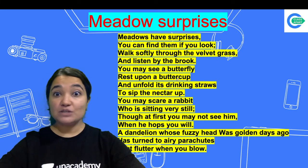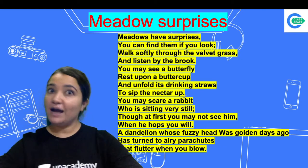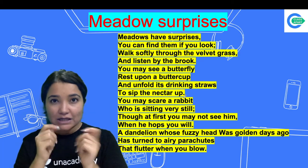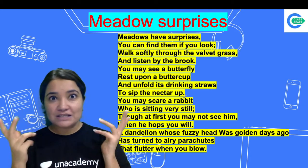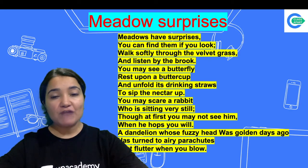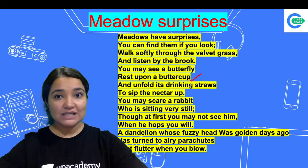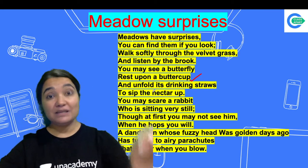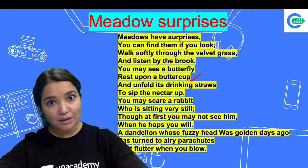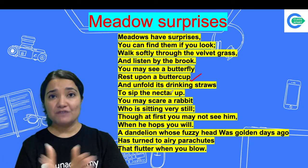You may see a butterfly rest upon a buttercup and unfold its drinking straws to sip the nectar up. Butterflies sit on flowers and sip from them. We all know butterflies suck nectar from flowers. The butterfly's mouth part — its proboscis — has been compared to a drinking straw, unfolding to sip the nectar up.